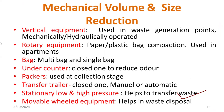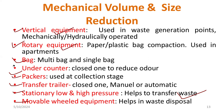Apart from that, movable equipment has different classification types: vertical equipment, rotary equipment, bag, under-container, packers, transfer trailer, stationary low-pressure, and movable wheel equipment. You can make a list of different types of mechanical compaction devices — vertical, rotary, bag, etc. These are the different types of compaction devices.